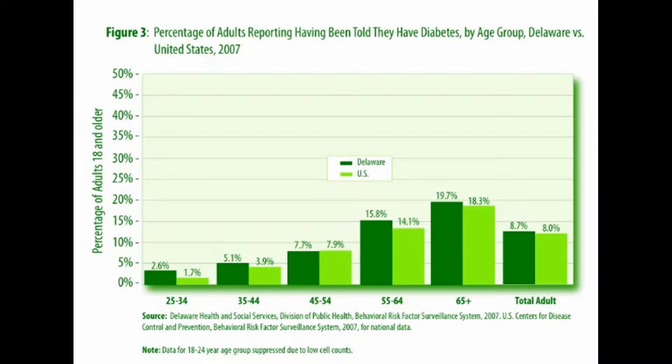This graph represents the incidence rate of diabetes by age. The age groups compared were 25 to 34, 35 to 44, 45 to 54, 55 to 64, and 65 plus. Advanced aging is a strong risk factor for the development of type 2 diabetes. 19% of people from Delaware aged 65 years or older have been told they have diabetes. The prevalence rate for this age group surpasses any other age category. Delaware has at least a 2% higher rate than the U.S. in each age group.